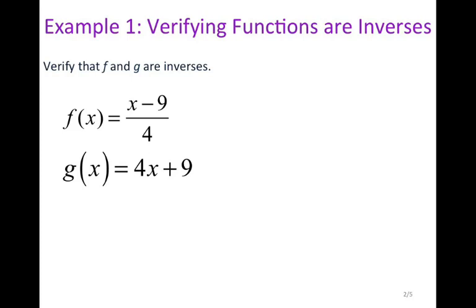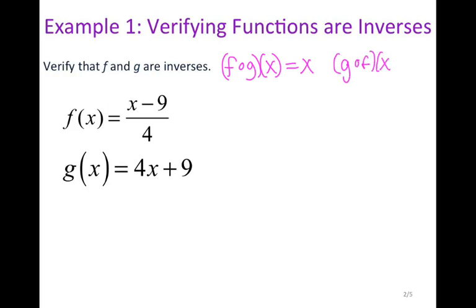For the first example we are verifying that these two functions are inverses. In order to verify that a function is an inverse of another function, you have two options. You can take the composition as f of g of x and see if that equals x, or you can go in the opposite direction, g of f of x, and see if that equals x.